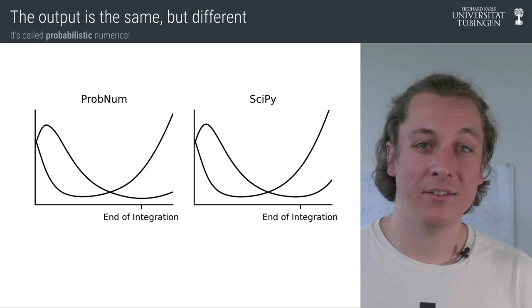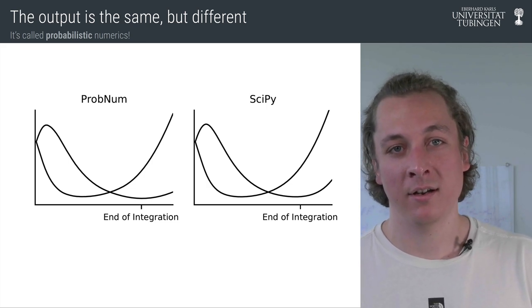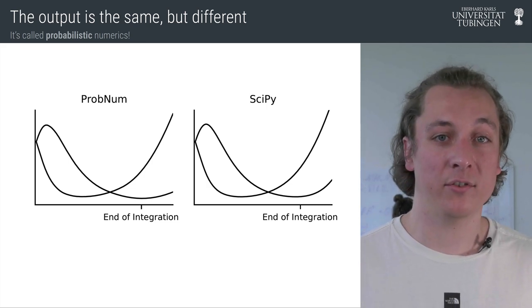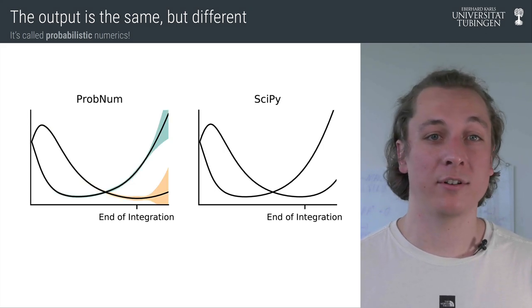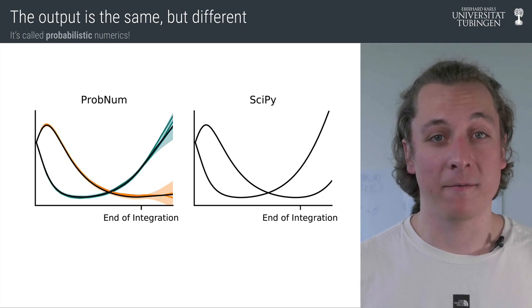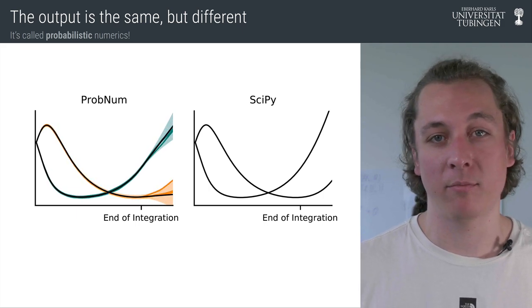However, as great as SciPy is, this is where its capabilities stop. In ProbNum, we have a full posterior, so for example we can plot standard deviations or we can even draw joint samples from this posterior. And if this is something for you, go ahead and check out the ProbNum code.